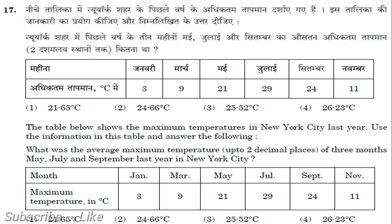Pause the video and check this table. The table below shows the maximum temperature in New York City last year. Use the information in this table to answer the following: What was the average maximum temperature up to two decimal places of three months — May, July and September last year in New York City? The answer is 24.66 degrees Celsius.